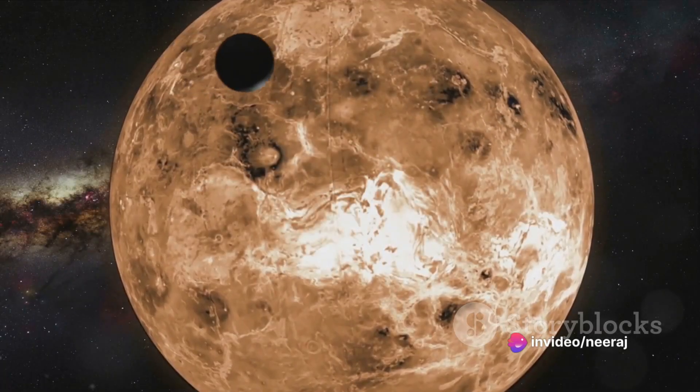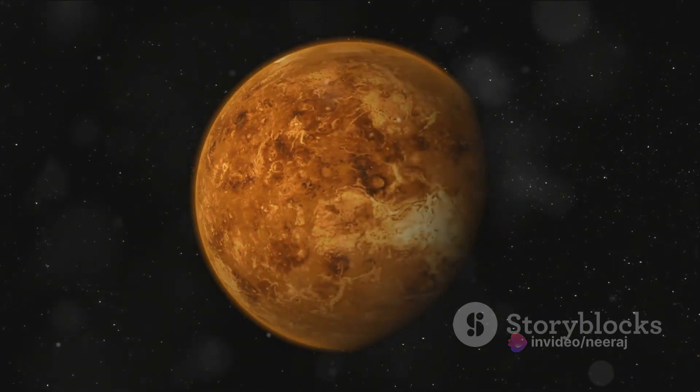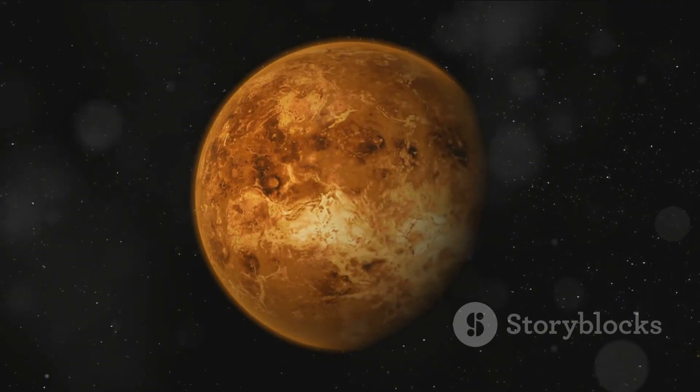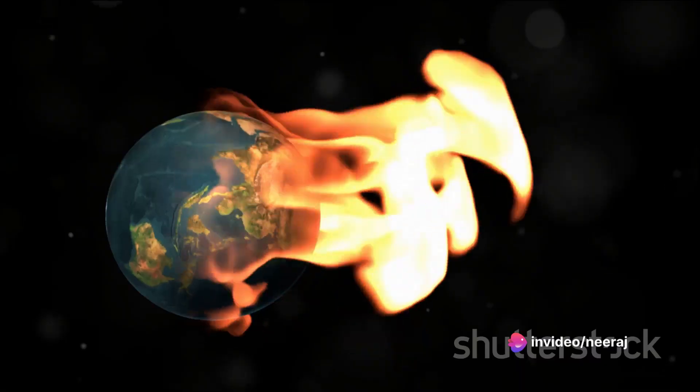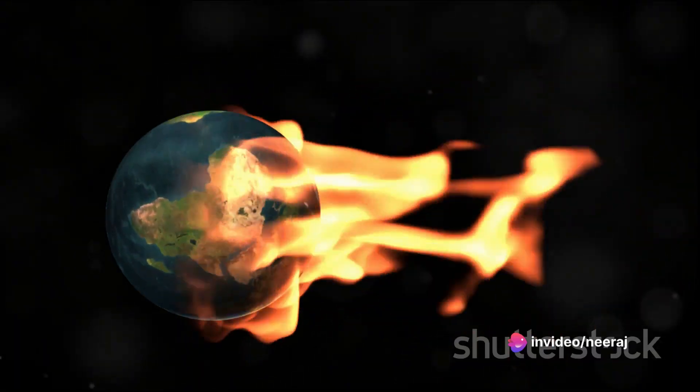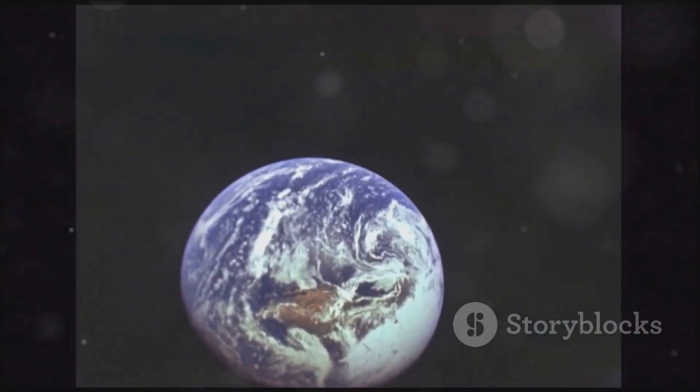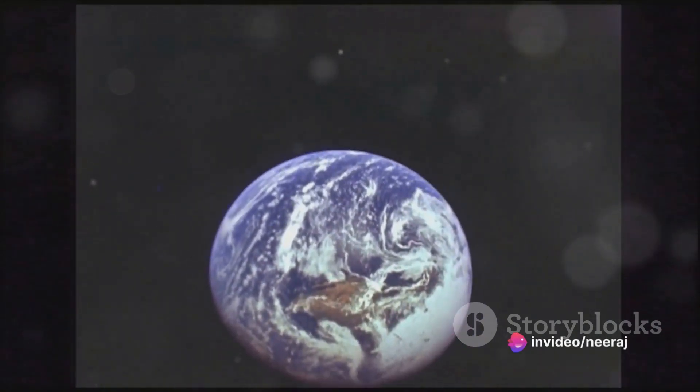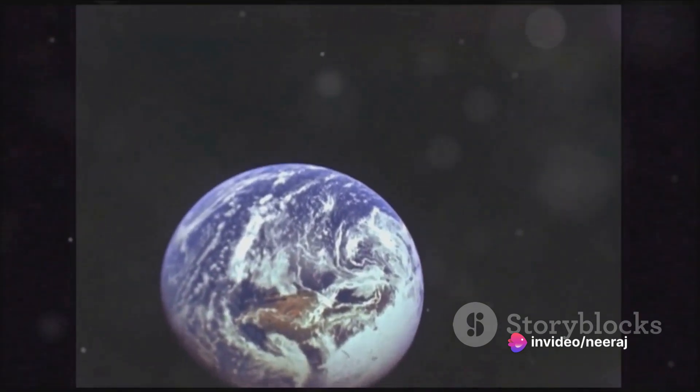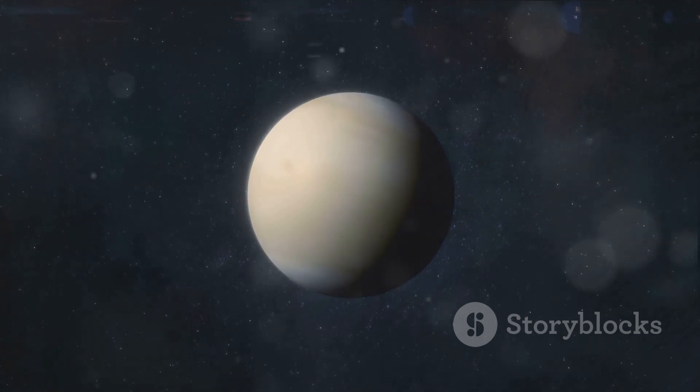Let's recap what we've learned about our so-called twin planet. Venus, despite its nickname, is a world apart from Earth. Its surface conditions are a stark contrast to our own, characterized by extreme heat and dryness, with temperatures hot enough to melt lead. This inferno is primarily due to a runaway greenhouse effect, trapping heat and creating a boiling hellscape devoid of liquid water. The paradox lies in the fact that despite these harsh conditions, Venus and Earth share striking similarities. They're almost identical in size, composition, and proximity to the Sun.